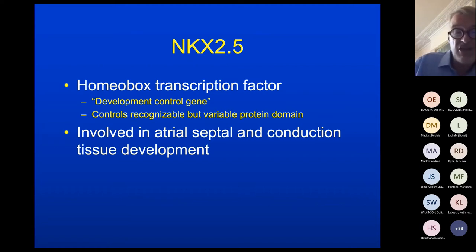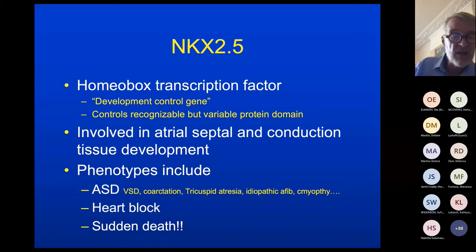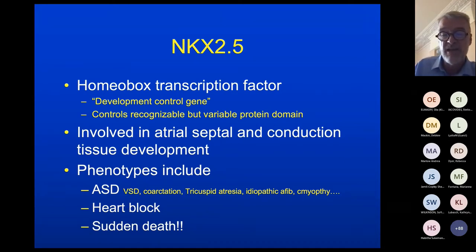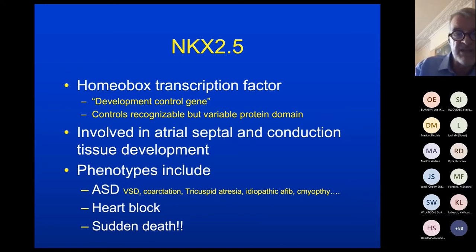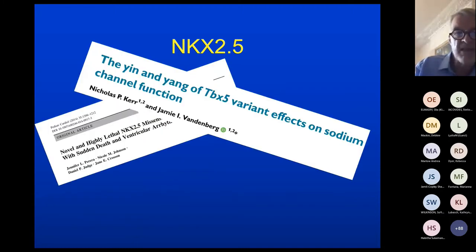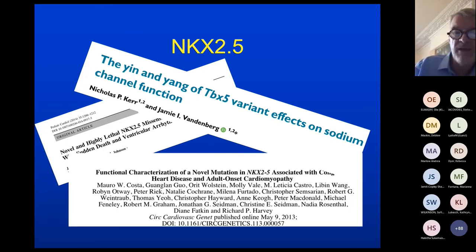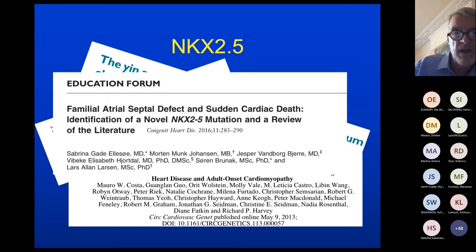NKX 2.5 is particularly involved in atrial septal and conduction tissue development. The phenotypes include ASD, VSD, coarctation, tricuspid anomalies, idiopathic atrial fibrillation, and cardiomyopathy. They can lead to progressive conduction disorders, heart block, and importantly, they can lead to sudden death. We now have had three families in our ICC service with an association of life-threatening ventricular arrhythmias with this gene. The more you look, the more you find, as we're learning more about NKX 2.5's association with nasty arrhythmias and structural defects.